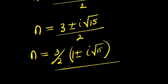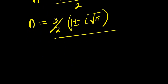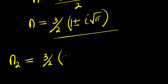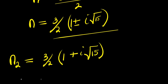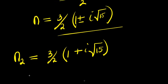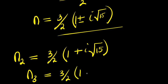So at this point, we have two complex values for n: n₂ = (3/2)(1 + i√15), and n₃ = (3/2)(1 - i√15).